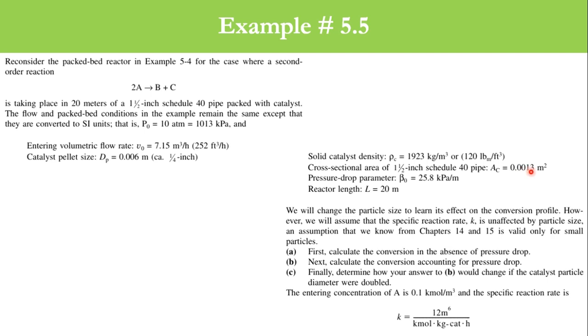The cross-sectional area of the pipe is 0.0013 square meter. The pressure drop parameter beta naught is 25.8 kilopascal per meter, which we calculated previously. Reactor length is 20 meters.